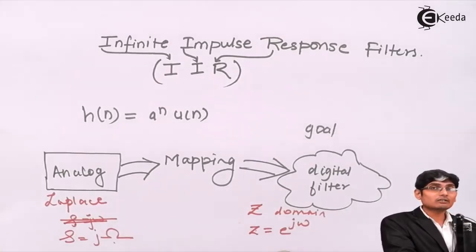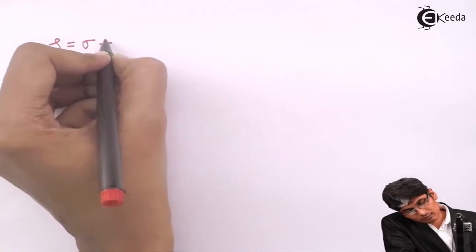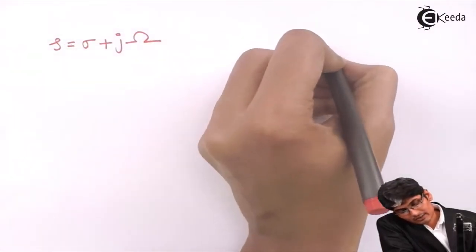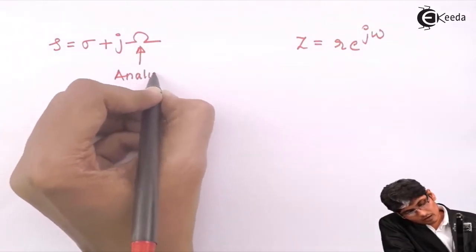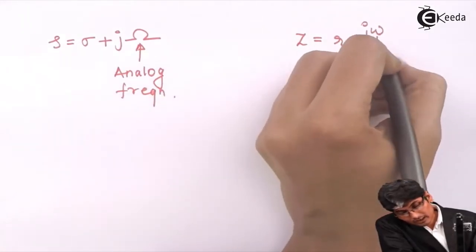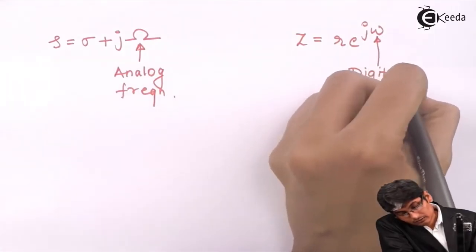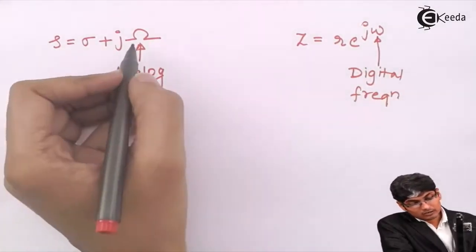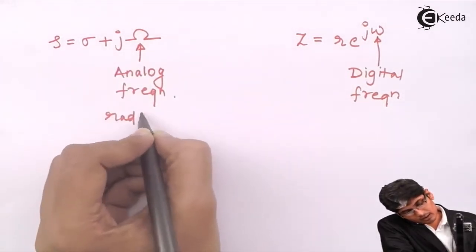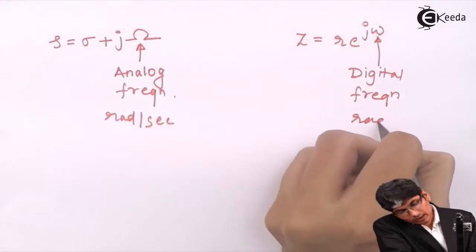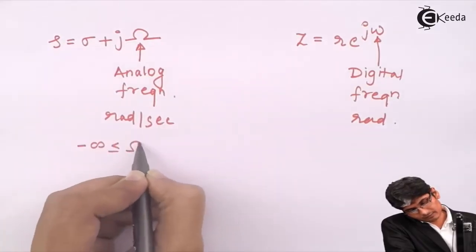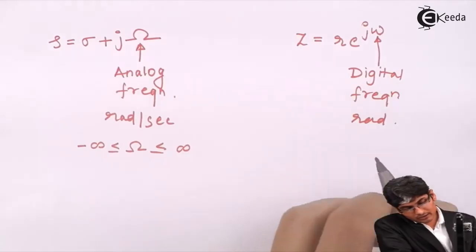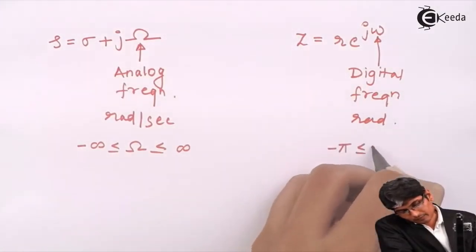In general, the s-plane is represented as s = σ + jω, and z = r·e^(jω). The ω in the s-plane stands for analog frequency, measured in radians per second, with limits from minus infinity to plus infinity. The ω in the z-domain stands for digital frequency, measured in radians, with limits from minus π to plus π.